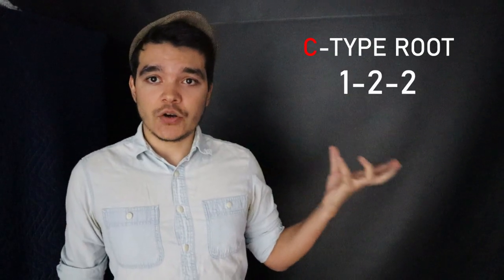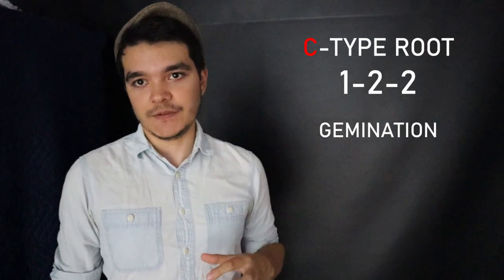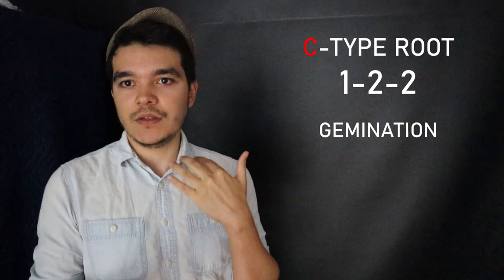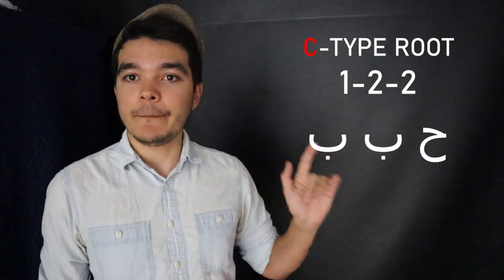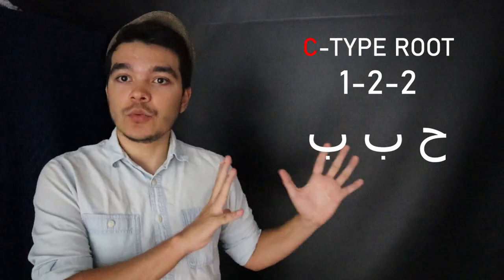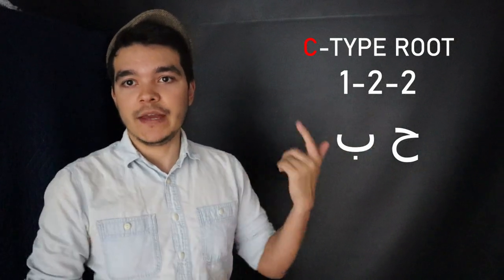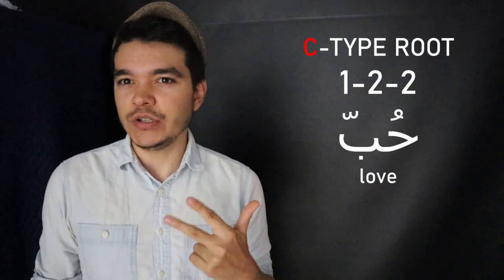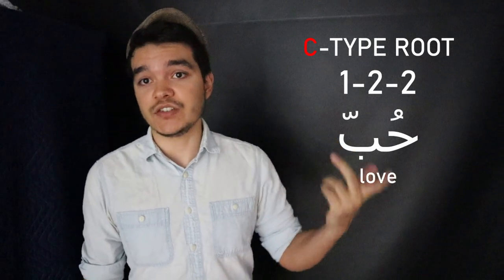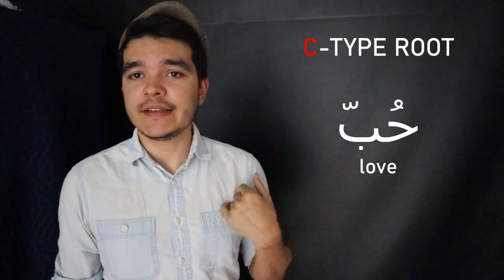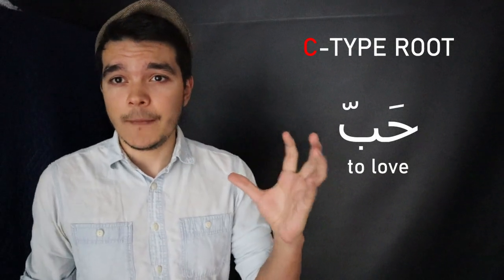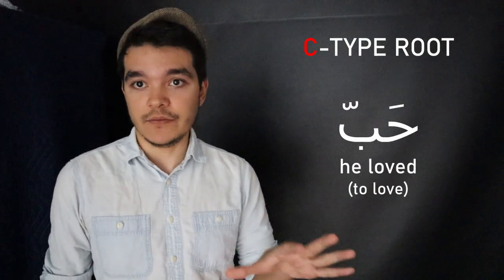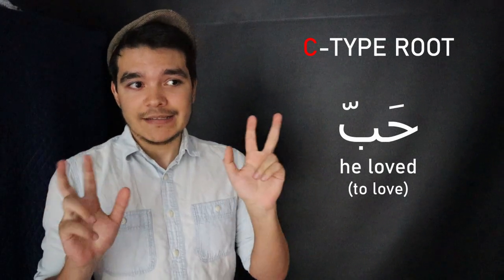Because you have the same letter for the last two letters of the root in type C, you get something called gemination — the repetition of the same letter. They get fused and you put a shadda on it. For example, the root with the meaning of love: you fuse the last two letters and add a shadda, so it sounds like 'hobb.' It seems like there's only two letters, but there's actually three — it's just that the two B's got combined with a shadda.